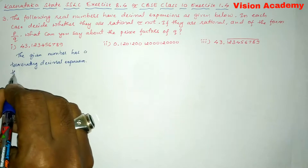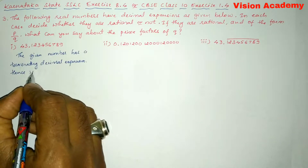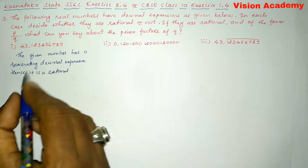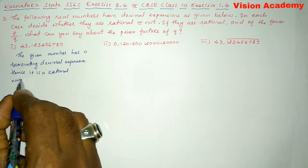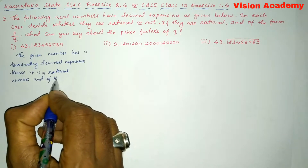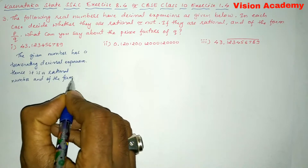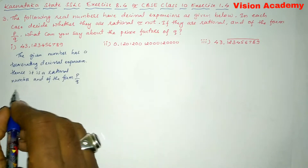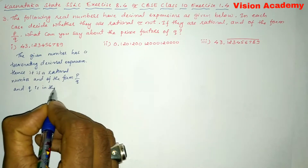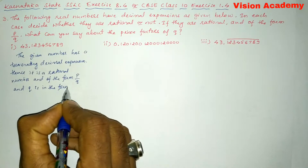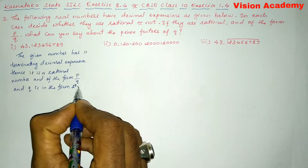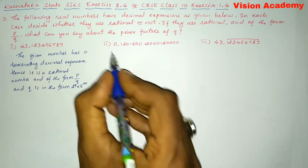Hence it is a rational number and of the form P by Q. And Q is in the form 2 to the power n into 5 to the power m.